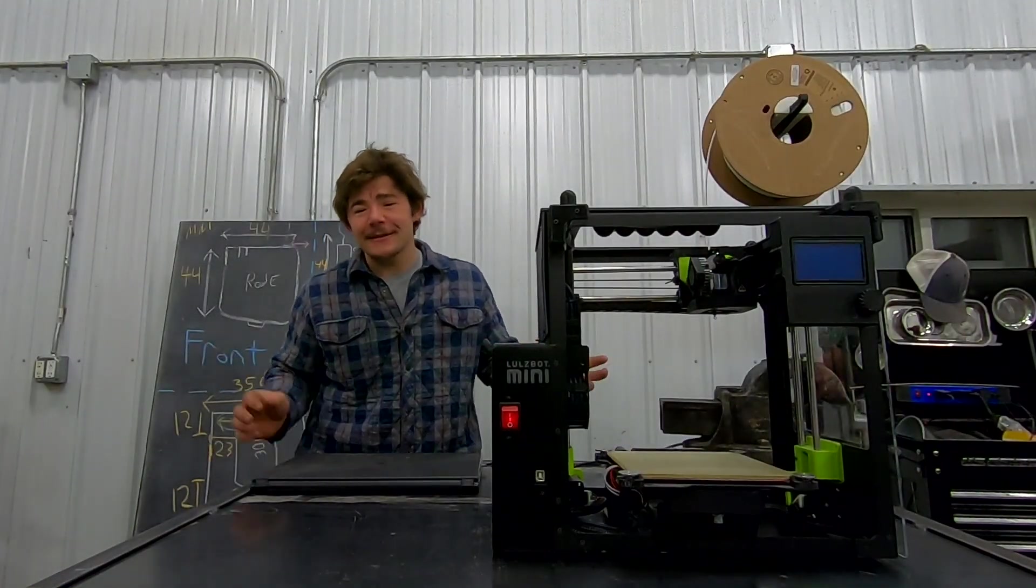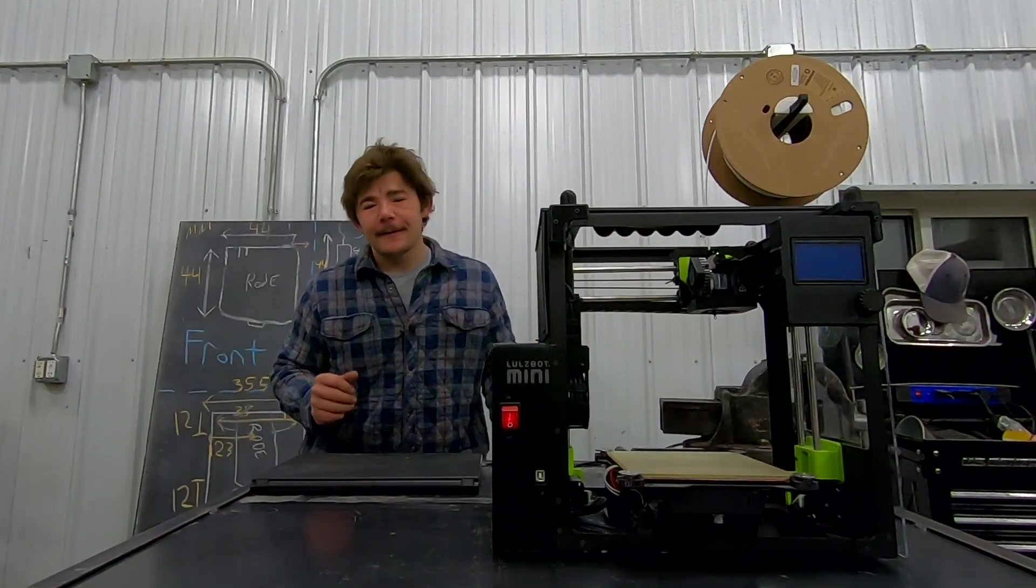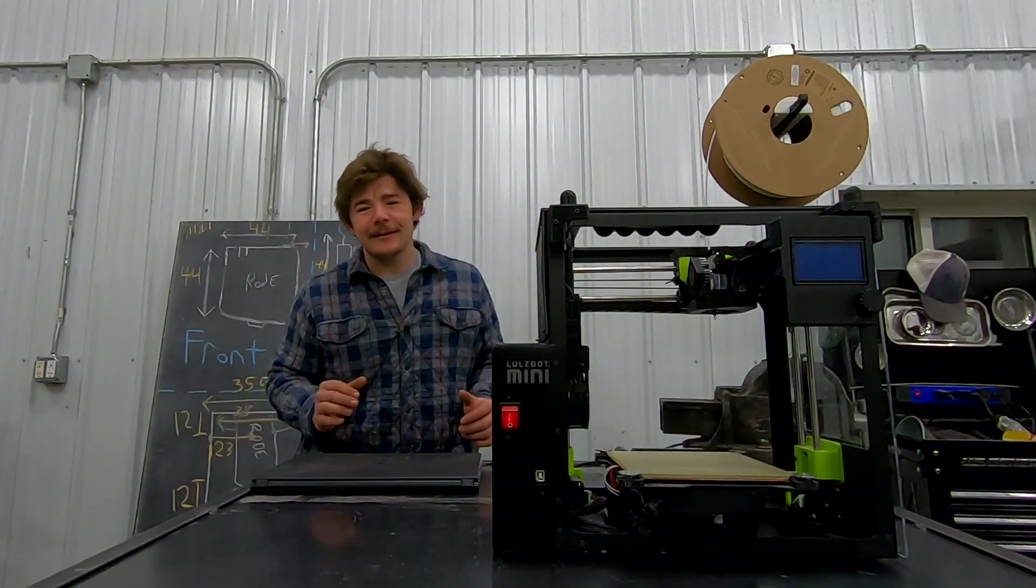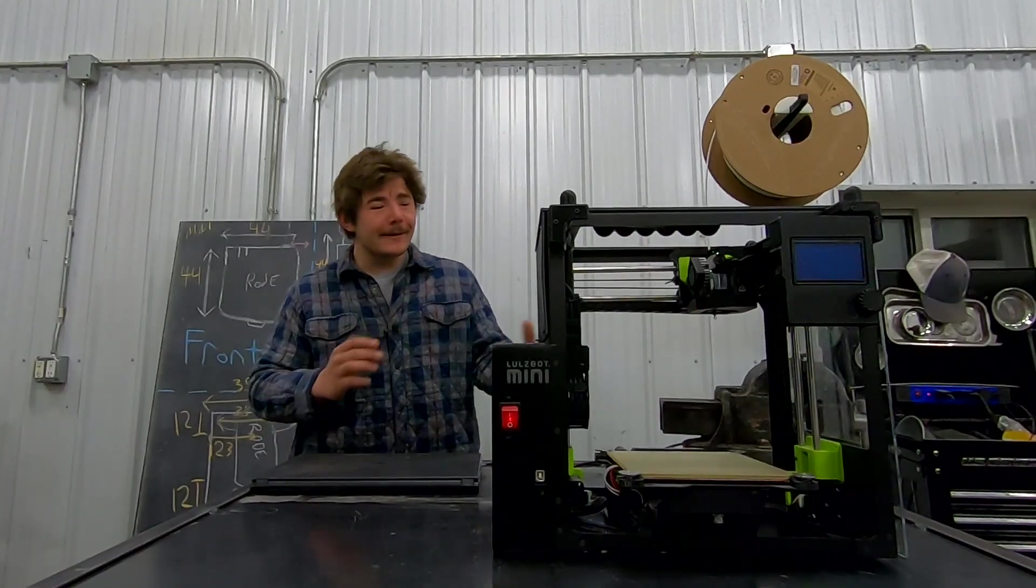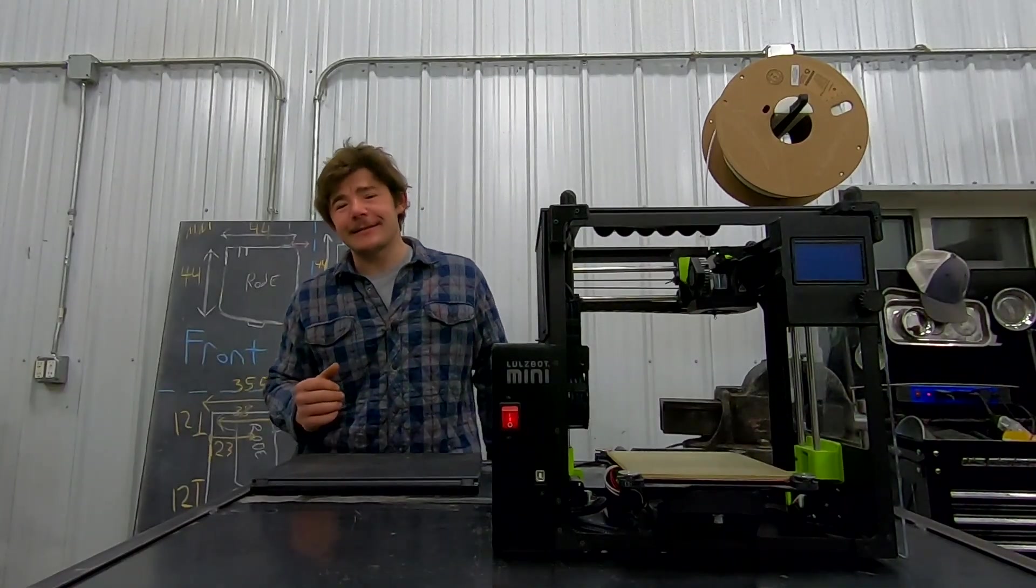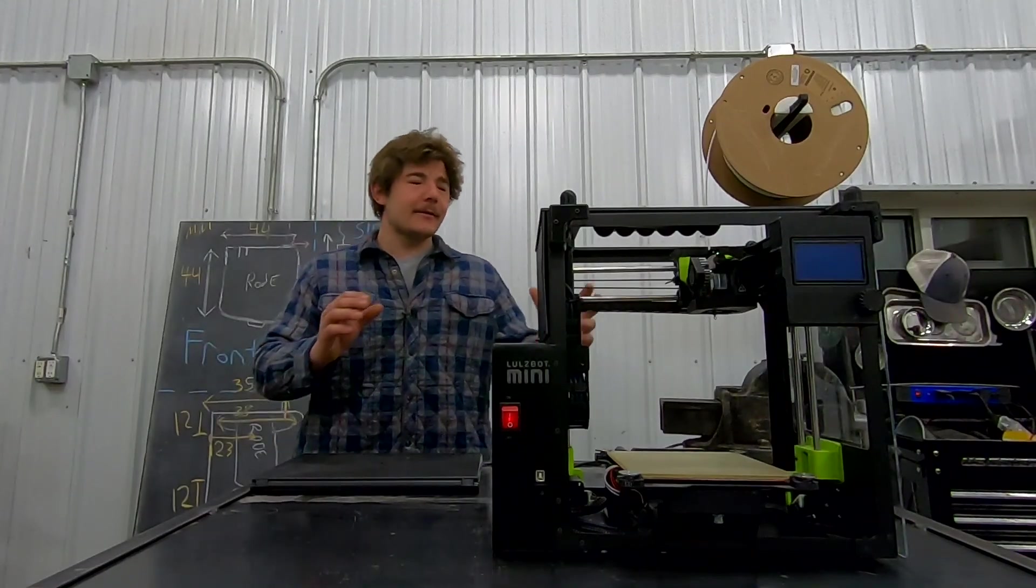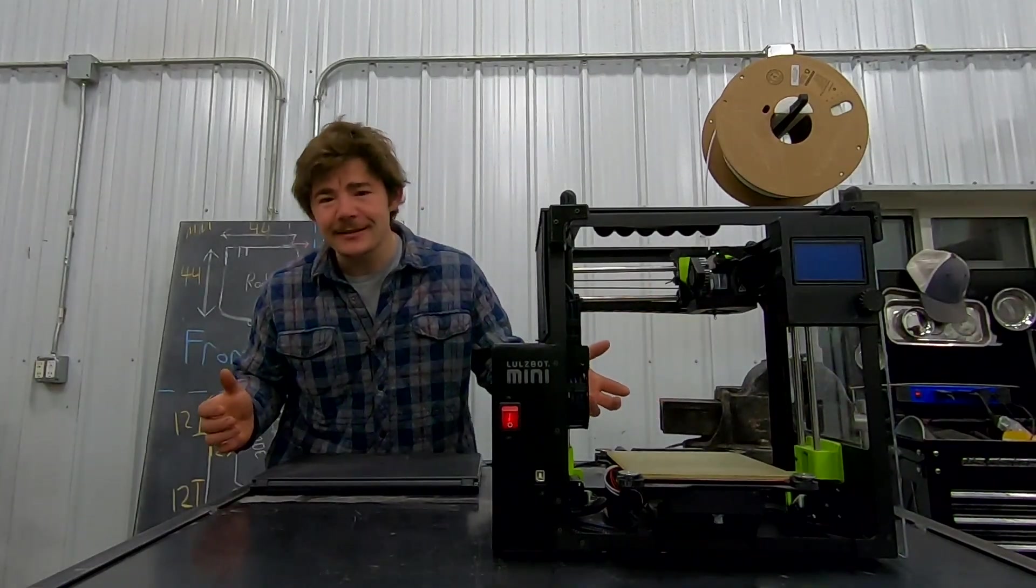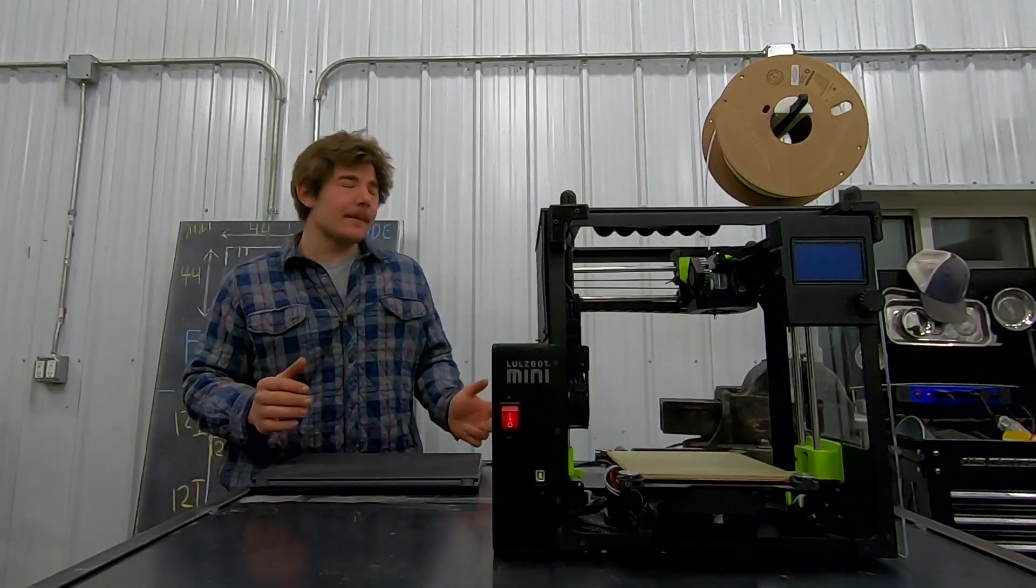So we got ourselves a 3D file and we have ourselves a 3D printer. Now, it's not quite as easy as you think. I can't just shoot that STL file into the 3D printer because the 3D printer can't read an STL file. The 3D printer needs a code to run because this 3D printer runs on three axes, just like our 3D modeling. We have an X, a Y, and a Z.